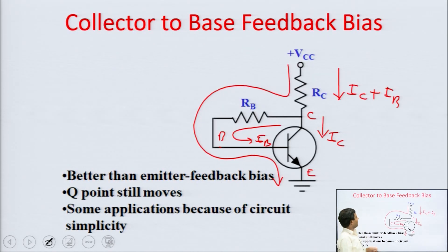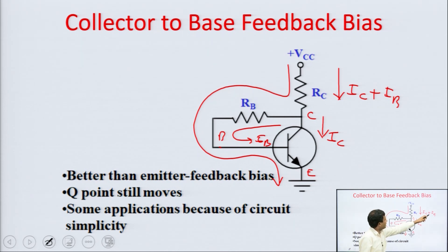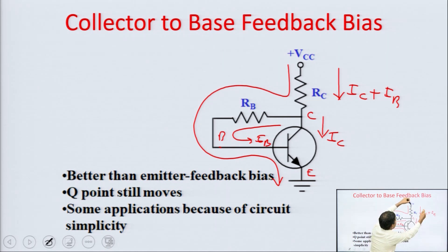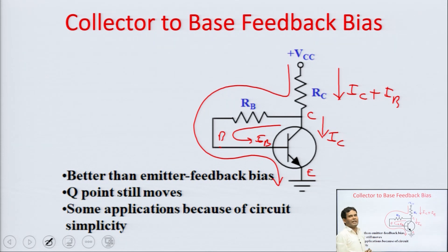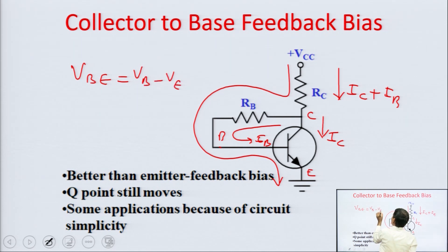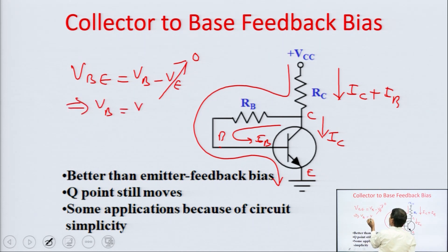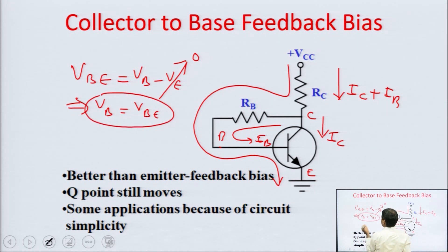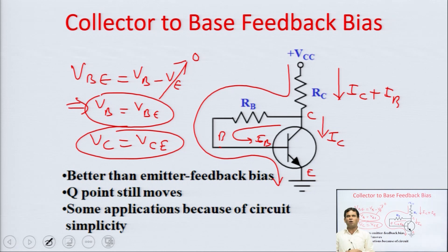If the examiner asks for the collector point voltage: VC equals VCC minus (IC plus IB)·RC. To find VB: since the emitter is grounded, VE equals zero, so VBE equals VB minus VE means VB equals VBE. VCE also equals VCE since the emitter is grounded. This is how we analyze node voltages for this circuit.